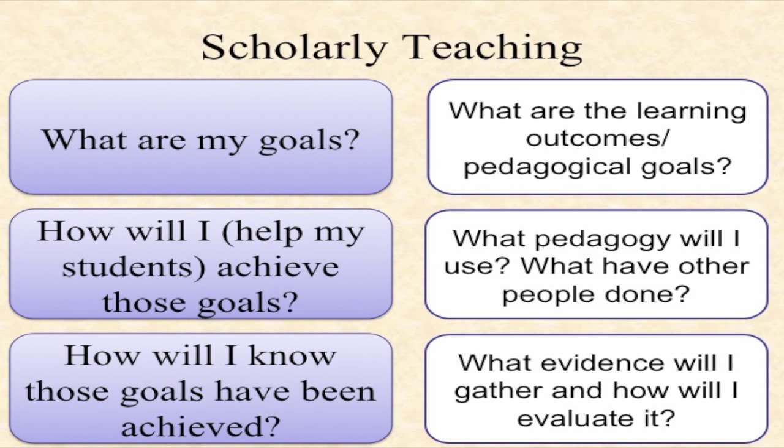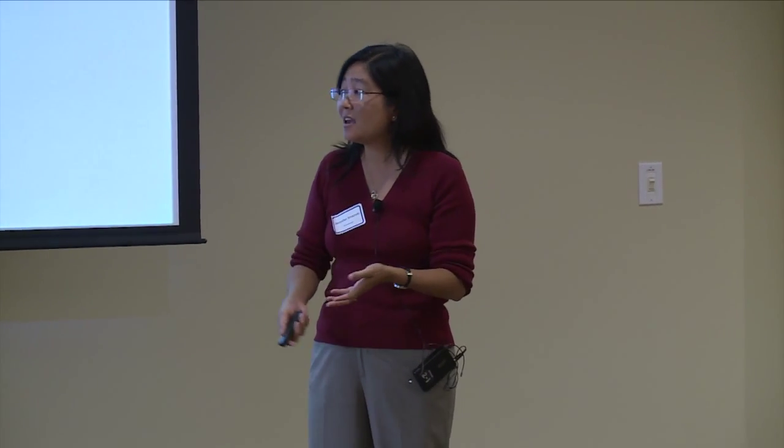Think about the process you engage in as a researcher. You start with a research question — your goal — and then you think about how you're going to answer it. Different disciplines have different methods, but we're all searching for the answer. We also have standards within our disciplines about what it means to answer those questions adequately, and part of peer review is telling you if you've done that well. So if we think in these three steps — what is my goal, how am I going to achieve it, and how will I know if it's been achieved — we do that without thinking when we're in research. But when we turn to teaching, we're often not this specific. It isn't a conscious process.